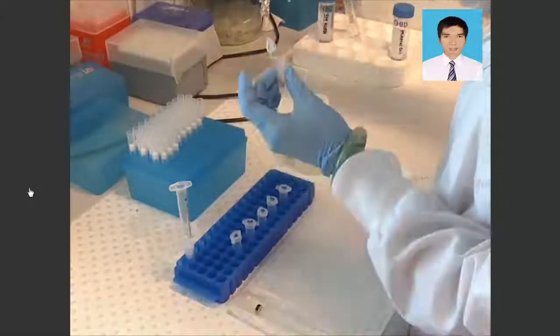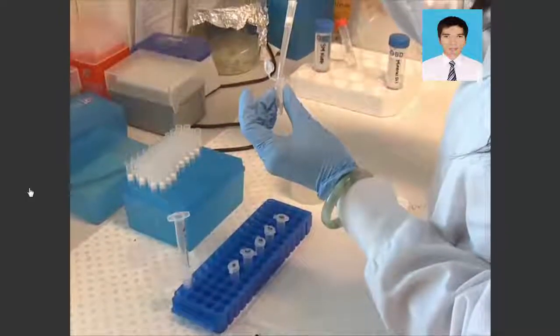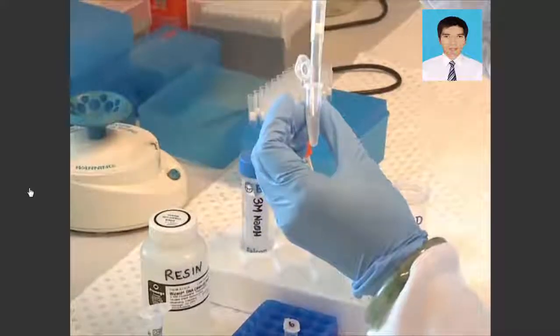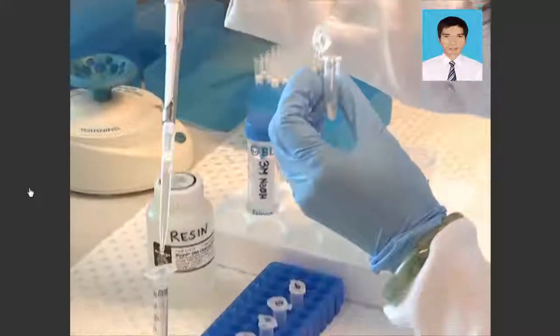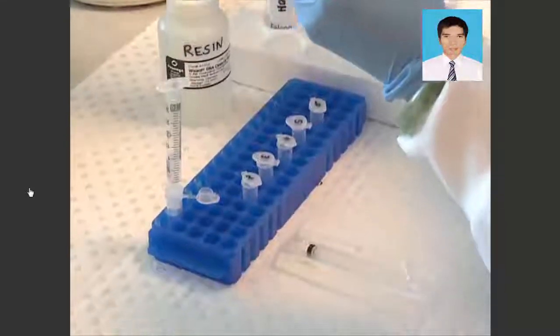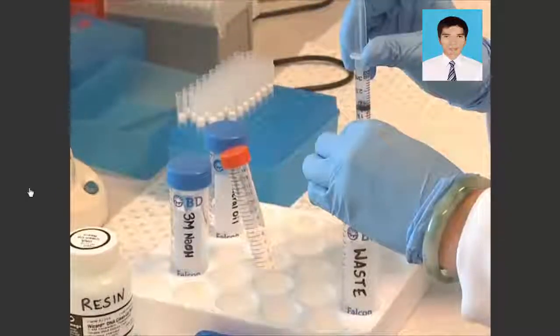For the next steps, our lab uses the Promega Wizard DNA cleanup system. Add 1 mL resin to the DNA samples, invert the tube to mix, then pipette the solution into a syringe attached to a desalting column.